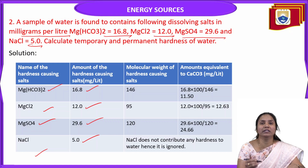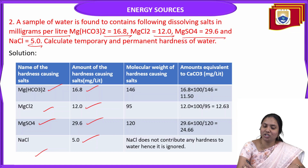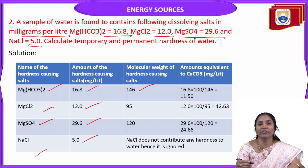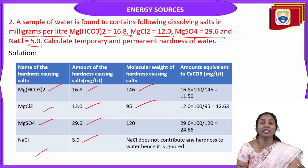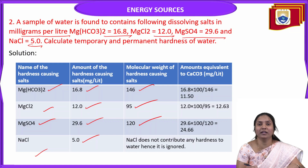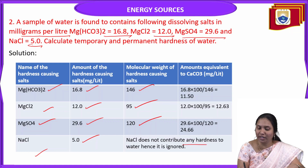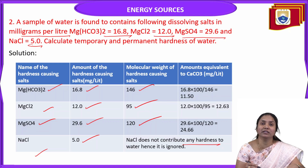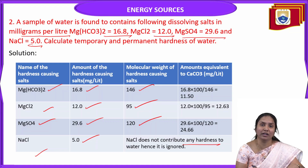The molecular weights are: magnesium bicarbonate = 146, magnesium chloride = 95, magnesium sulphate = 120. NaCl (MW = 58.5) does not contribute any hardness to water, so it is ignored.